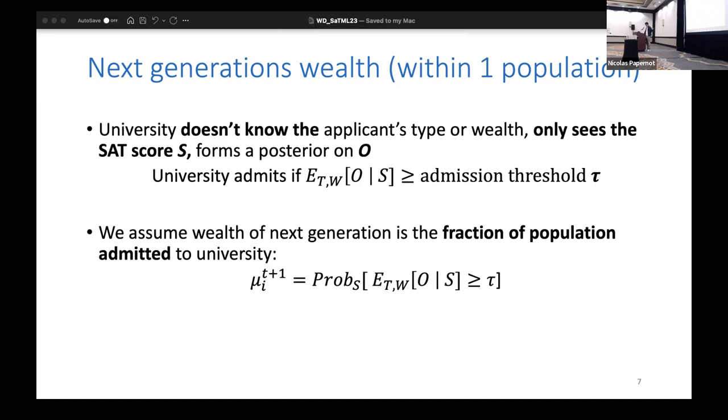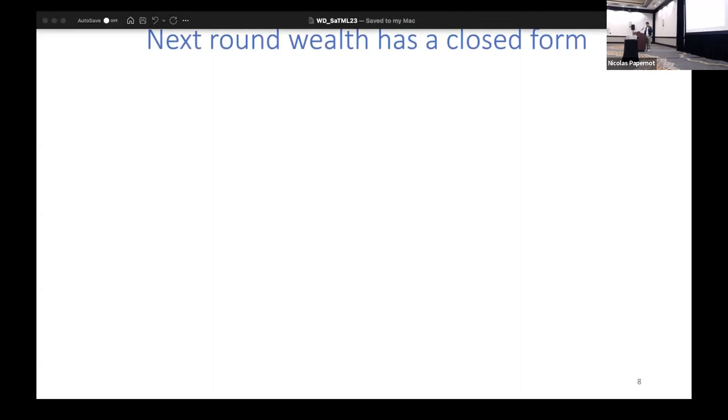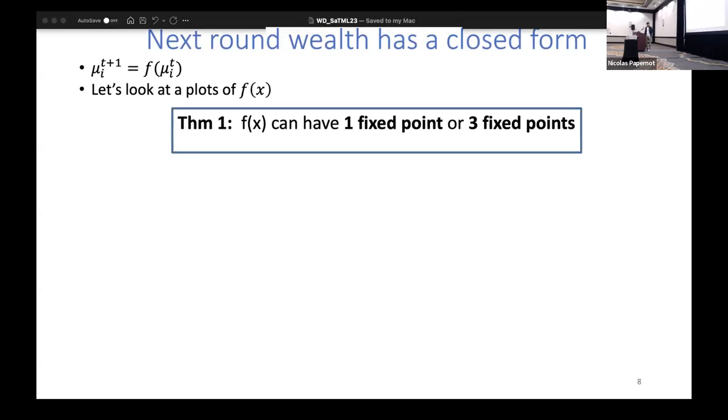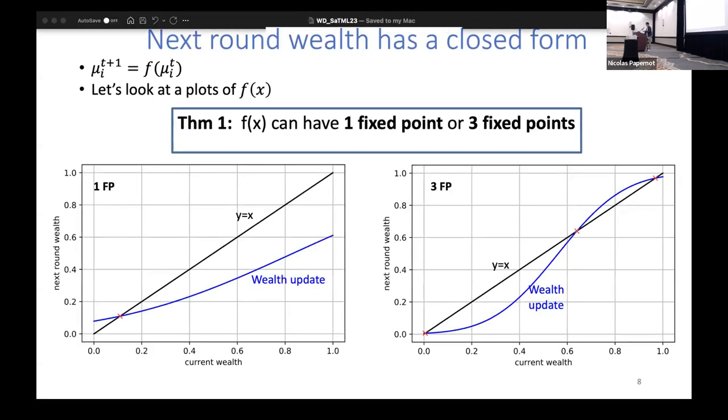Under these two modeling assumptions and for the Gaussian type and wealth, our first contribution is that we can quantify exactly in closed form what the next generation's wealth is. It's exactly μᵢ(t+1) = f(μᵢ(t)) for some closed form function f. What's important here is that we show that this wealth update function f can have either one fixed point or three fixed points - it can't have any more or two.